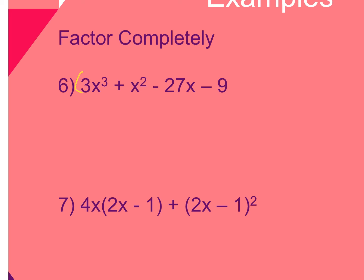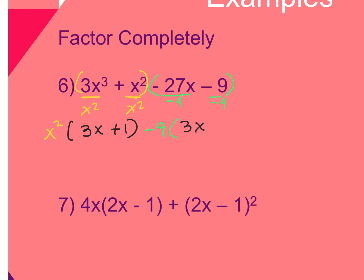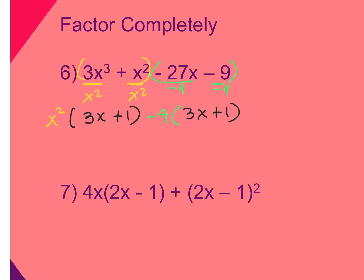I'll make a yellow group and a green group. The GCF of the yellow group is x squared. In the parentheses I write what I get after dividing, which is 3x plus 1. For the greatest common factor of the green group — remember what ends up outside needs to be the same — so instead of pulling out a positive 9, my GCF is actually negative 9. Then I write what remains, and now I group them.